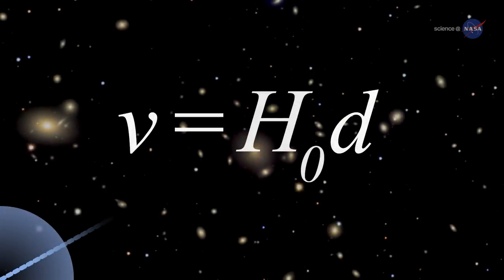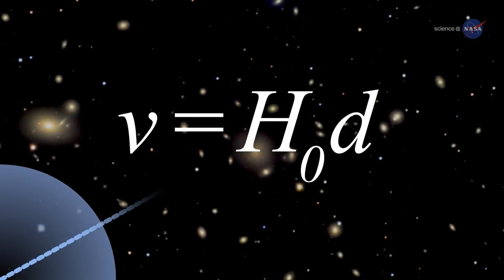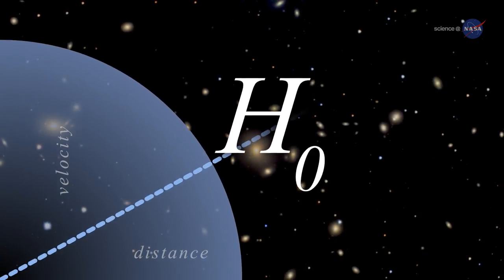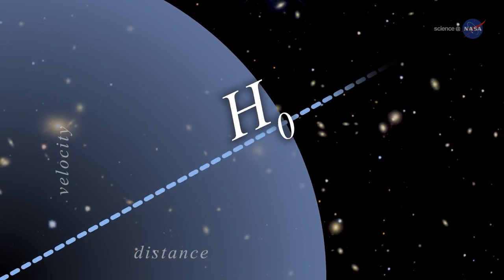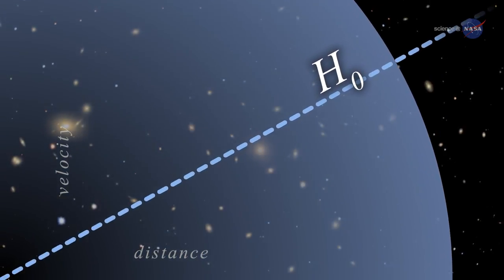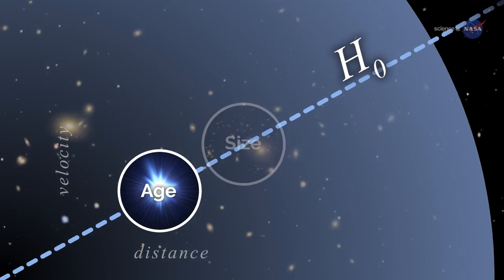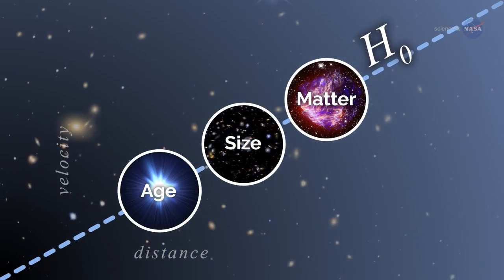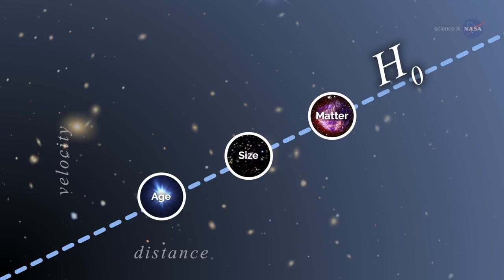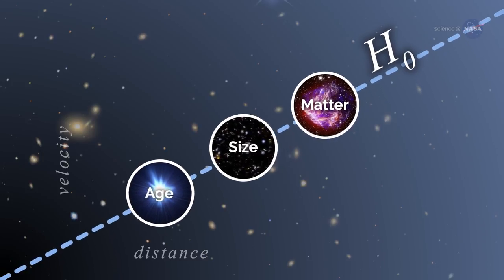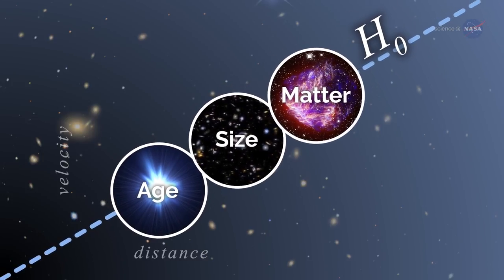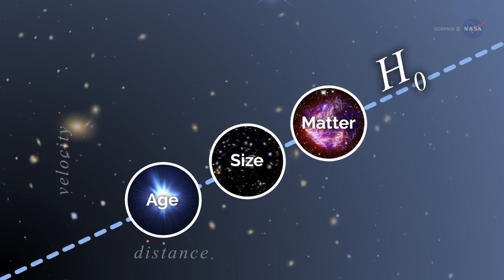In the standard model of cosmology, H-naught is a crucial ingredient, right up there with the speed of light. H-naught factors into everything we know about the universe — how old it is, how big it is, what it's made of. If H-naught is tweaked, we get a different age of the universe, different relative amounts of matter, dark matter, dark energy, and so on.